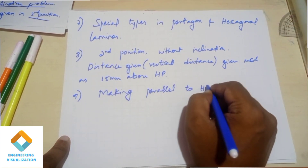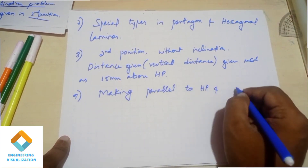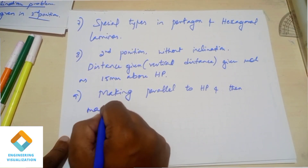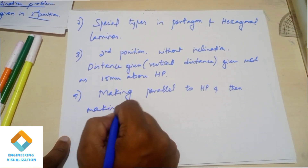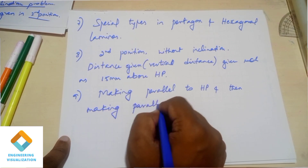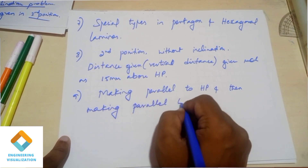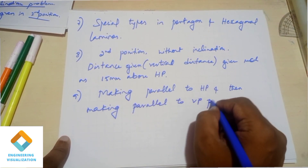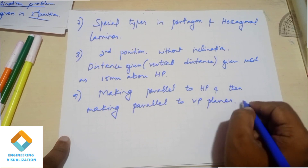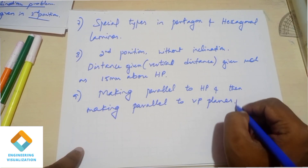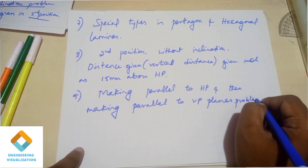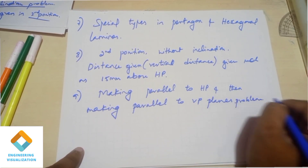It will be mentioned as parallel to HP and VP. Make one of the sides parallel to HP and then make it parallel to VP. Particular terms will be used in the third position.